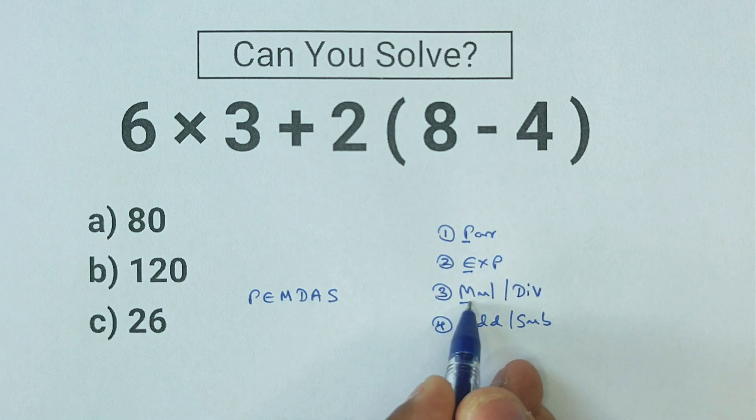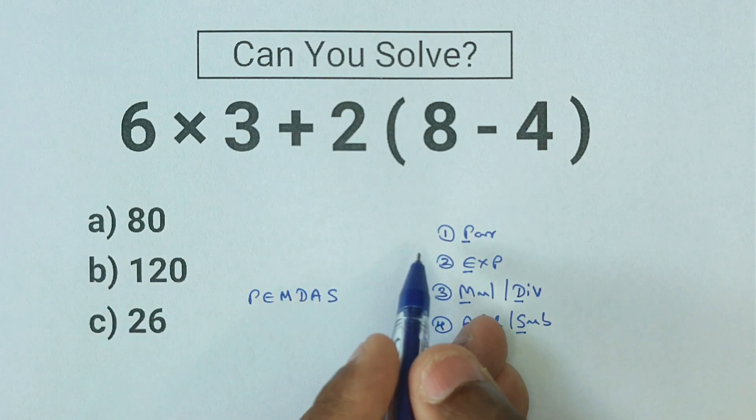P for parenthesis, E for exponents, M for multiply, D for divide, A for add, and S for subtract. Okay, so let's use this order of operations.